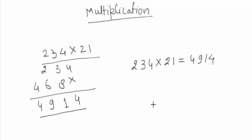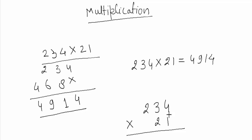Here we have 234 and 21 — this is the multiplication and this is the result. We can use Vedic mathematics. First, multiply the last digits: 4×1 is 4, so write it as 04. Now write 234 and 21 aligned and we will multiply like this.